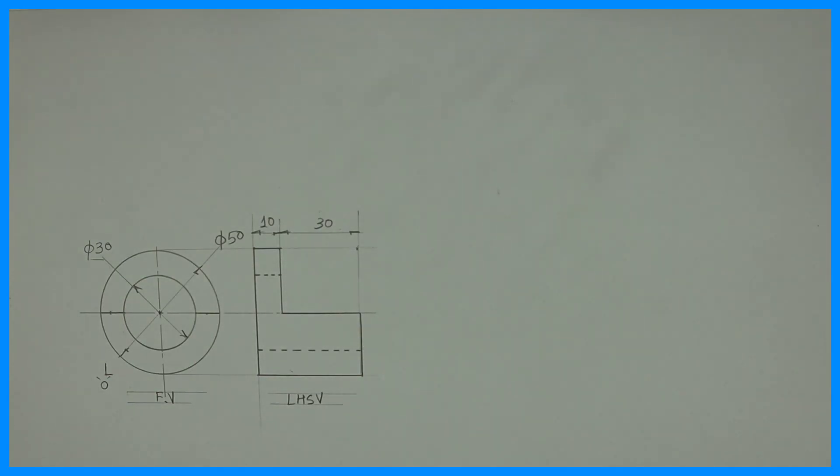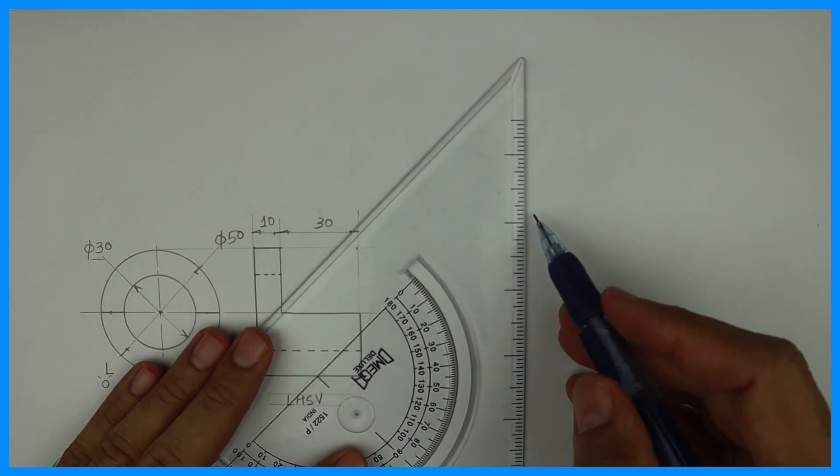Welcome to technical drawing. Today we are going to draw this isometric object. First we will draw a box.